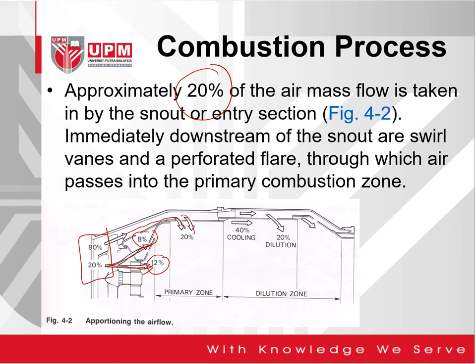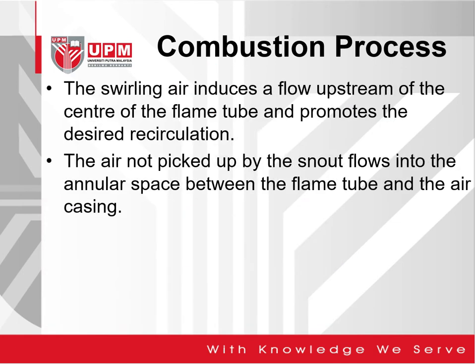Immediately downstream of the snout are swirl vanes and a perforated flare through which air passes into the primary combustion zone. In the primary zone, 12% plus 20% gives 32% of air, then further down we have 40% for cooling and 20% for dilution. The swirling air induces a flow upstream of the center of the flame tube and promotes the desired recirculation. The air not picked up by the snout — 80% — flows into the annular space between the flame tube and the air casing.